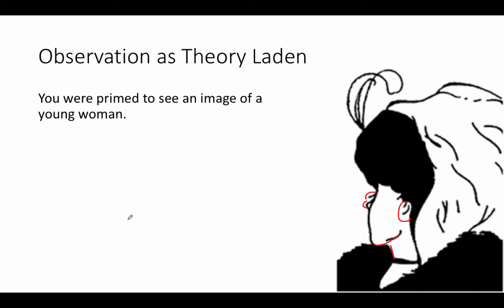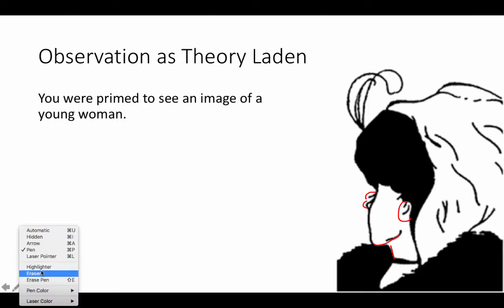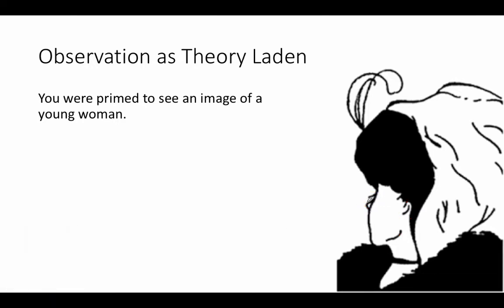But you can also be primed to see an image of an old woman. You can see an old woman — here's the nose, here's an eye, here's the mouth, here's the chin. Depending on how subjects are primed, that impacts how they perceive it. Of course, maybe you weren't primed because you've probably seen this before — it's a well-known example in psychology textbooks.